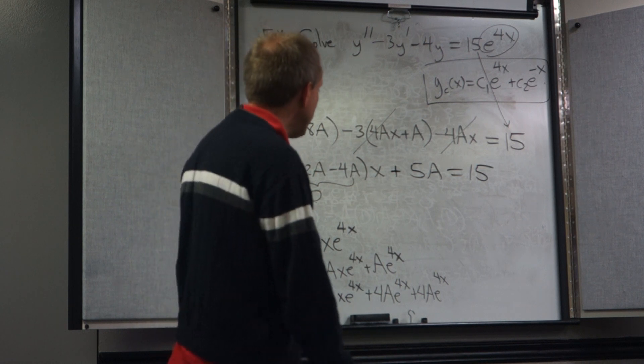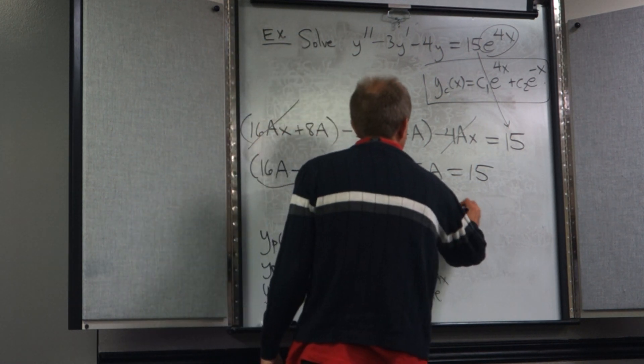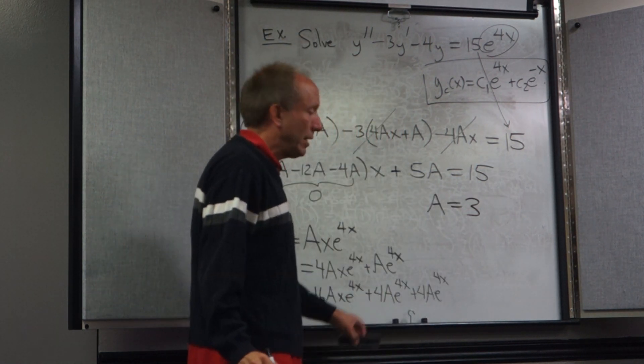So 5a is equal to 15. That means that a is going to equal 3.